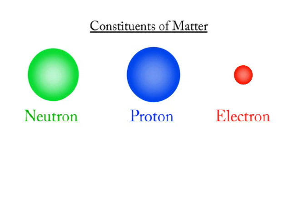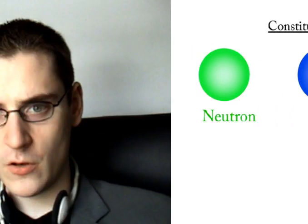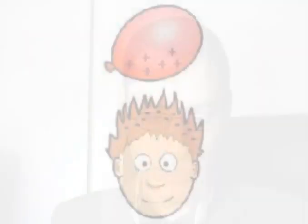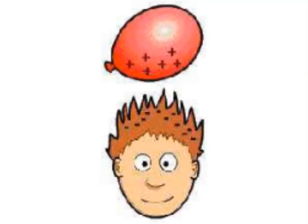So essentially all matter around us consists solely of protons, neutrons, and electrons. The interesting thing about electrons and protons is that they both have charge — protons have positive charge and electrons have negative charge. What you need to know about charge is that opposite charges attract each other, whereas the same charges repel each other.